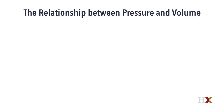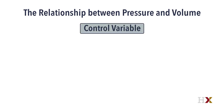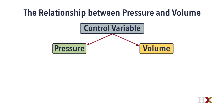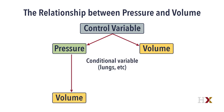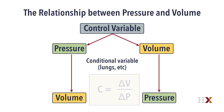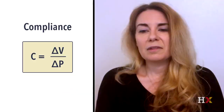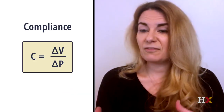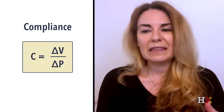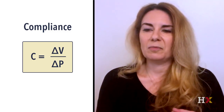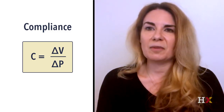Thinking about compliance, it's important to understand the relationship between pressure and volume. When we have the ventilator, we can set a control variable — either a pressure or a volume. Whichever one we set, we're going to receive the other as a conditional variable: if you set a pressure, you receive a volume, and if you set a volume, you will receive a pressure. The relationship between these two is what we refer to as compliance: the change in volume divided by the change in pressure. If a patient has poor compliance — stiff lungs that are difficult to expand — it's going to take a lot of pressure to get even a small tidal volume. Understanding this concept is very helpful in thinking about the ventilator.